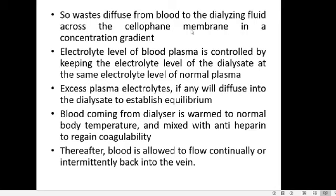During dialysis, waste diffuses from the blood to the dialyzing fluid across the cellophane membrane along the concentration gradient. The electrolyte level of the blood plasma can also be controlled by keeping the electrolyte level of the dialyzing fluid at the same level as normal plasma — so there is no loss or gain of electrolytes from the blood. Any excess plasma electrolytes will diffuse into the dialyzing fluid to establish equilibrium, preventing electrolyte imbalance.